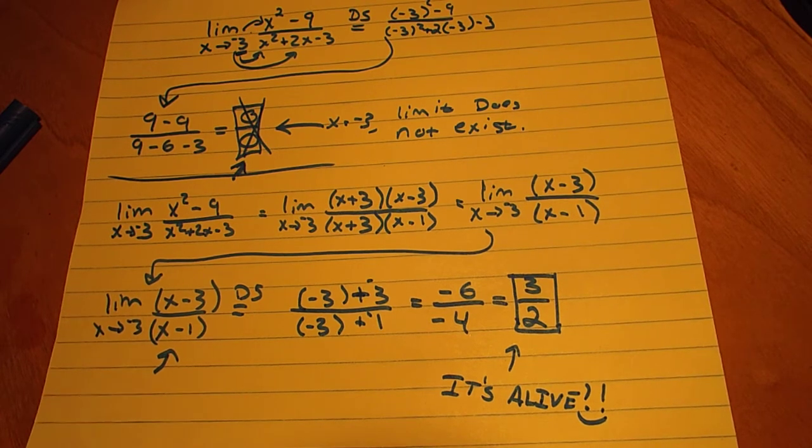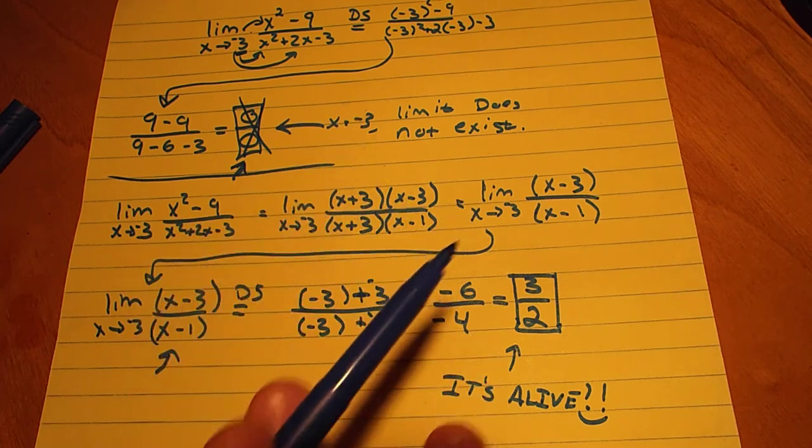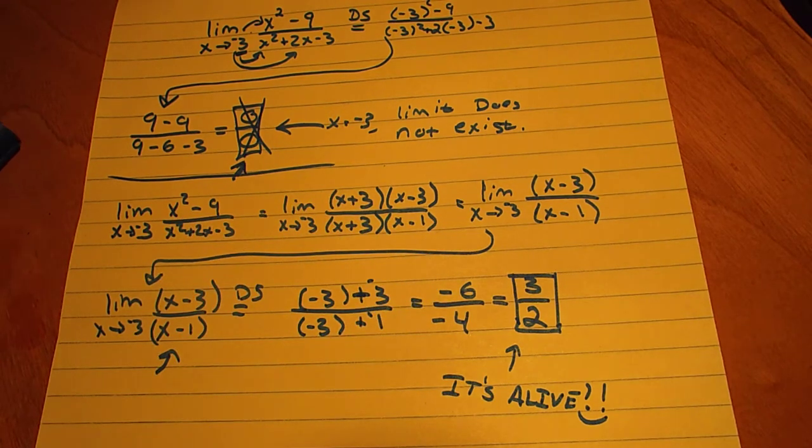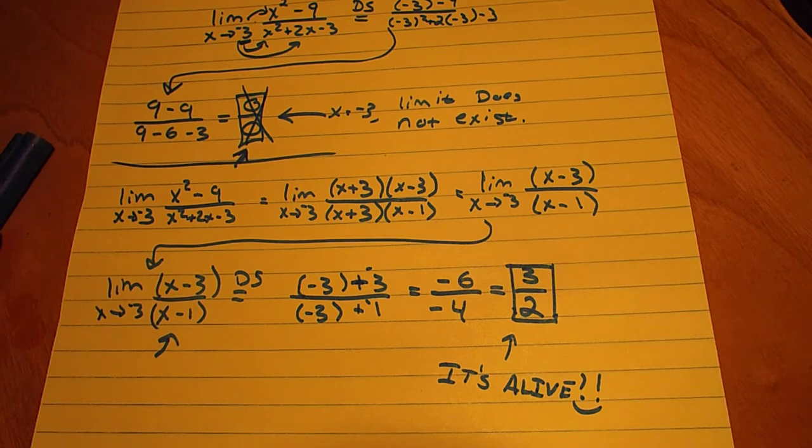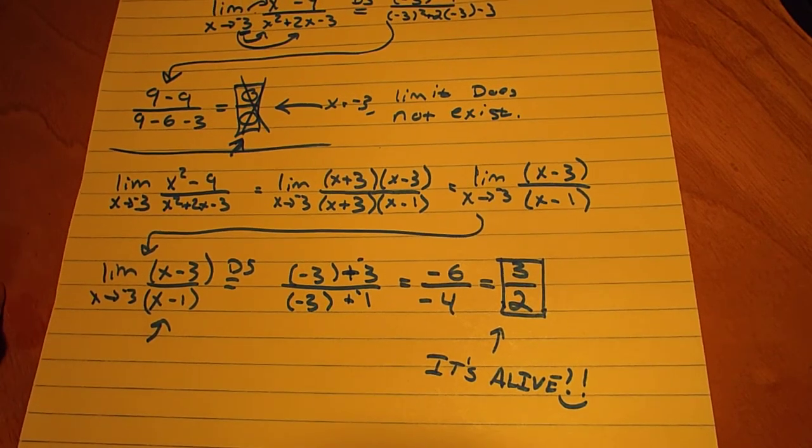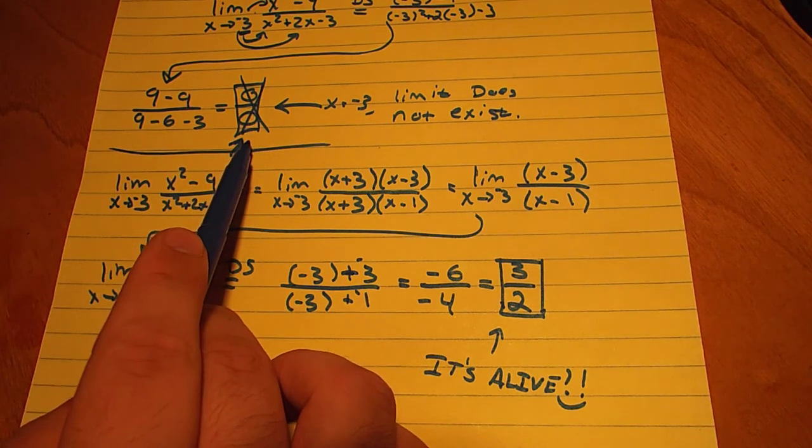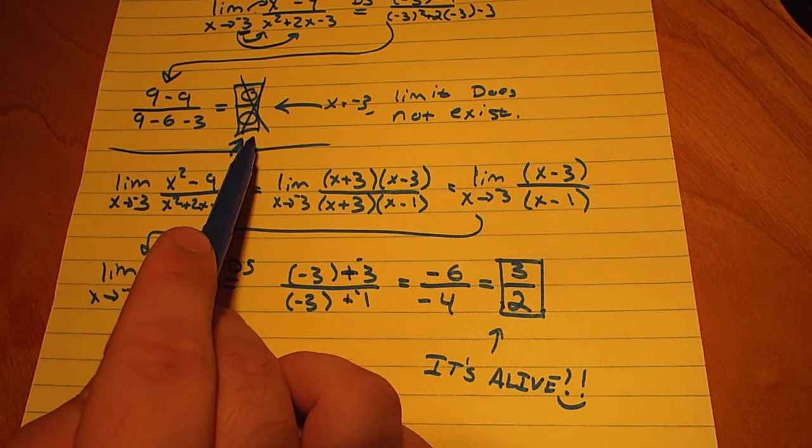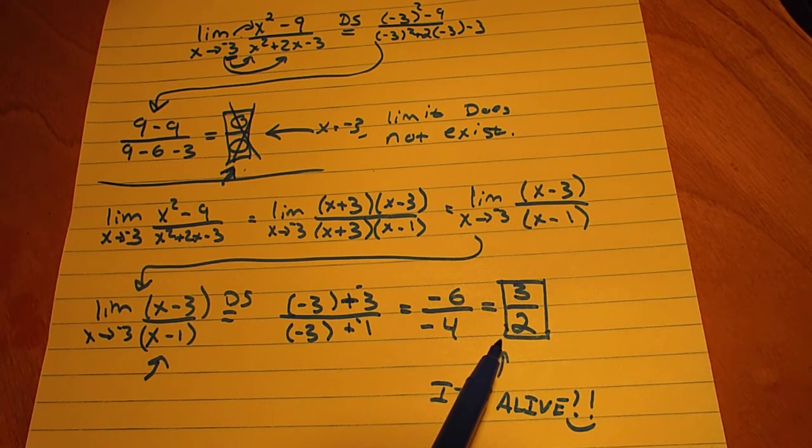So if we were to look at a graph of this equation, which I'm not going to show, but if you check out the table especially on a graphing calculator, you would find that as your x values got closer and closer to negative 3, at exactly negative 3 it would be undefined. But as we get closer to negative 3, we find that the values of y get closer and closer to 3 halves.